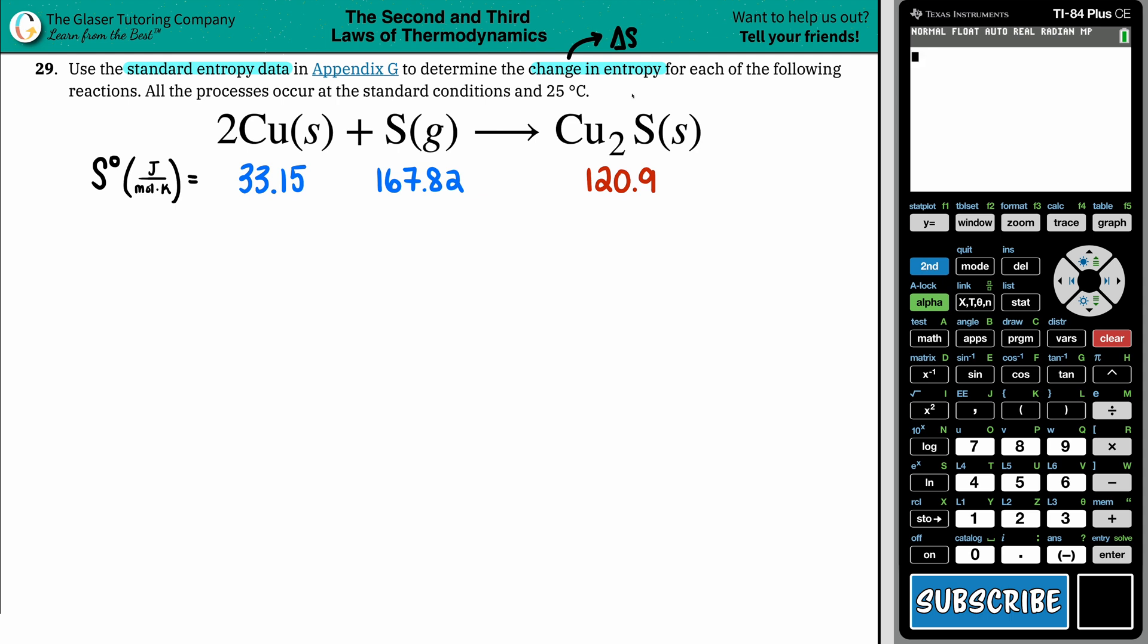And what entropy is, is it's talking about the randomness or the disorder or the chaos in the system. Now you can kind of guesstimate what our delta S value is going to be. Keep in mind, specifically, we are finding a delta S° because the degree sign, the notch on the top,